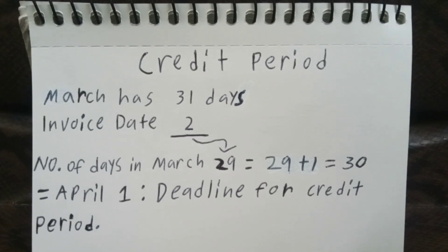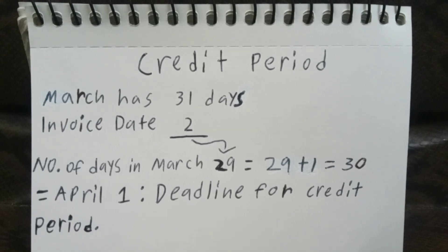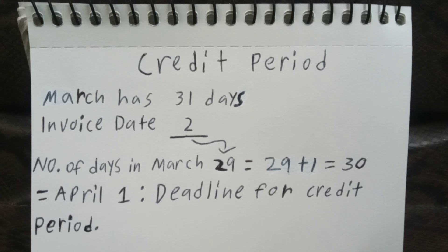And now for the credit period. All we have to do here is count 30 days from March 2. But we cannot simply add 30 plus 2, since the most number of days in a month is 31. So what we have to do first is get the total number of days in the month of March, which gives us 31 days. Then we subtract the invoice date, which is 2, leaving us with 29 days remaining in the month of March.